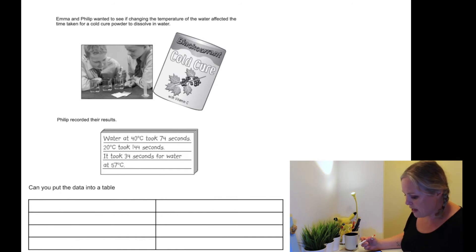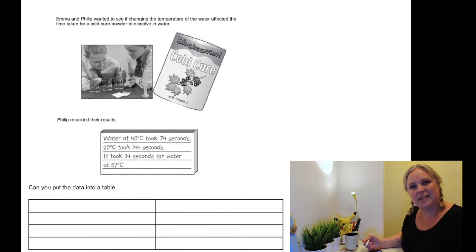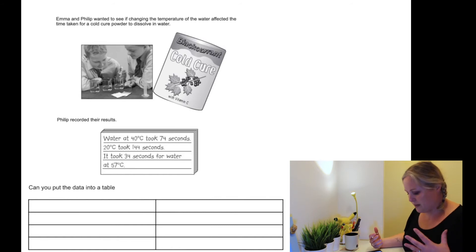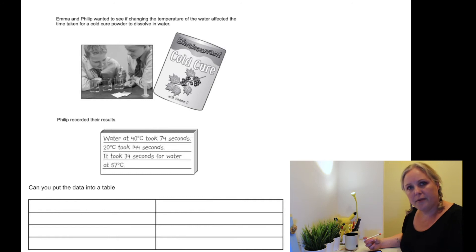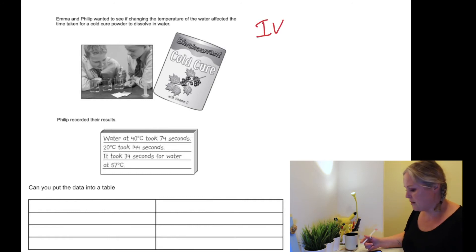Emma and Philip wanted to see if the change of temperature of water affected the time taken for cold cure powder to dissolve in water. Philip recorded his results on a scrap of paper, which isn't very helpful — he should have drawn a table beforehand. But now we're being asked to put that data into a table, and first we need to identify the independent and dependent variables.